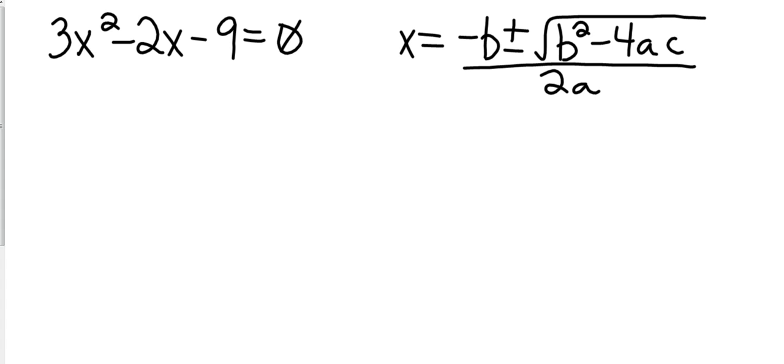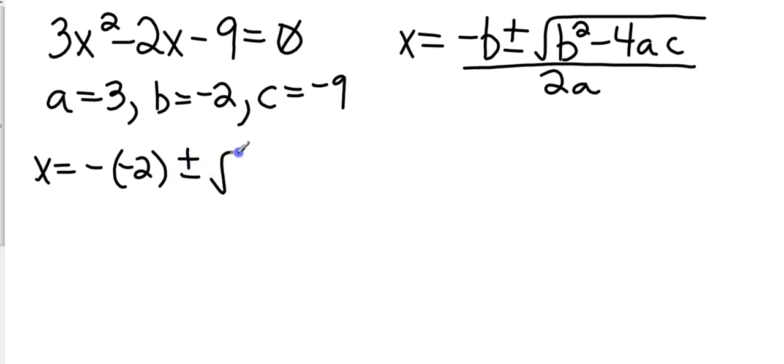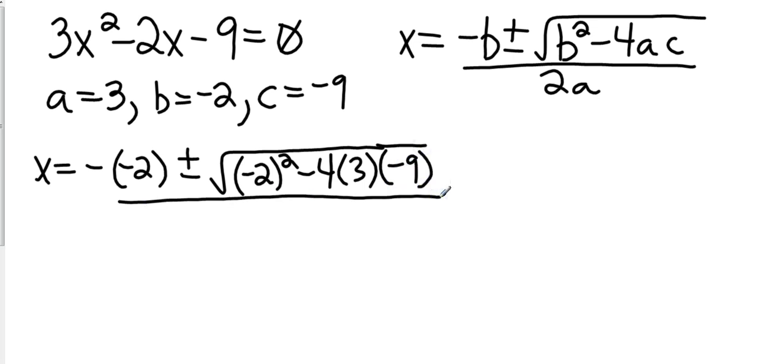You can have some fun with it. They'll think you're crazy, but just tell them your math teacher is crazy, and that's all right. So let's look at this equation: 3x² - 2x - 9 = 0. Let's identify a, b, and c. a is going to be 3, b is going to be negative 2, and c is going to be negative 9.